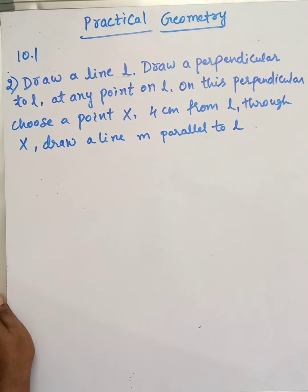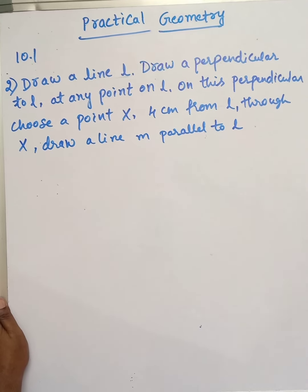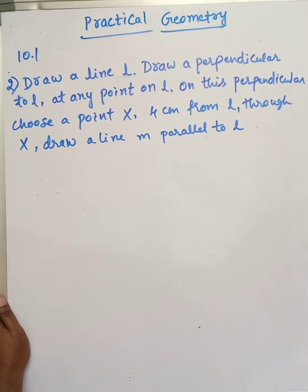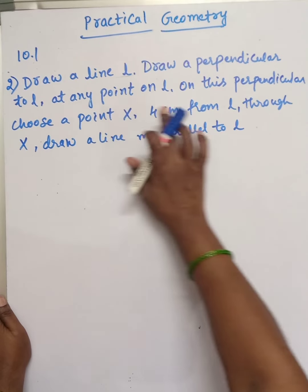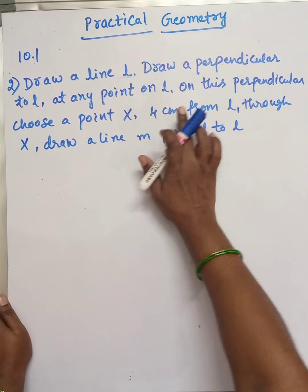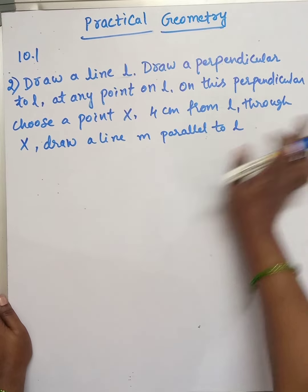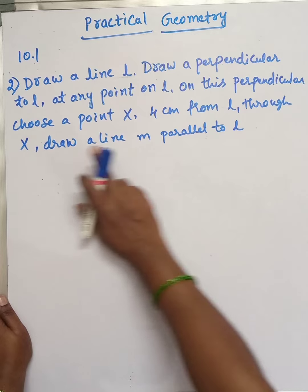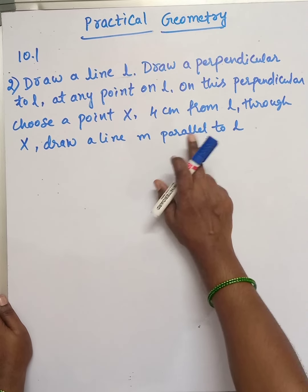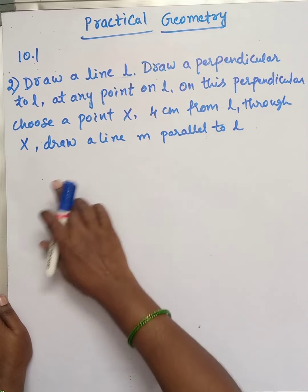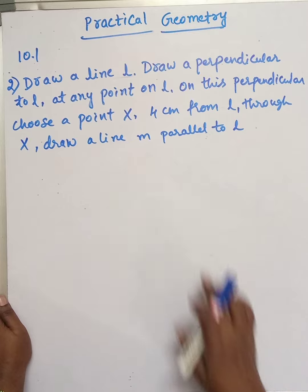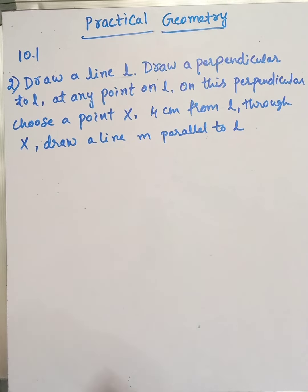Draw a line L, draw a perpendicular to L at any point on L. On this perpendicular, choose a point X, 4 cm from L. Through X, draw a line M parallel to L.